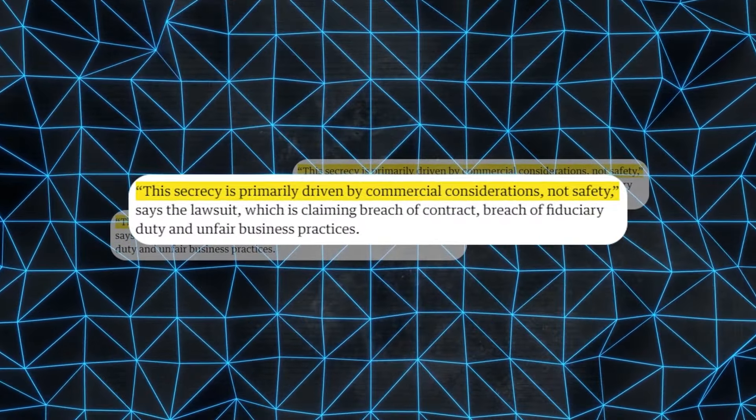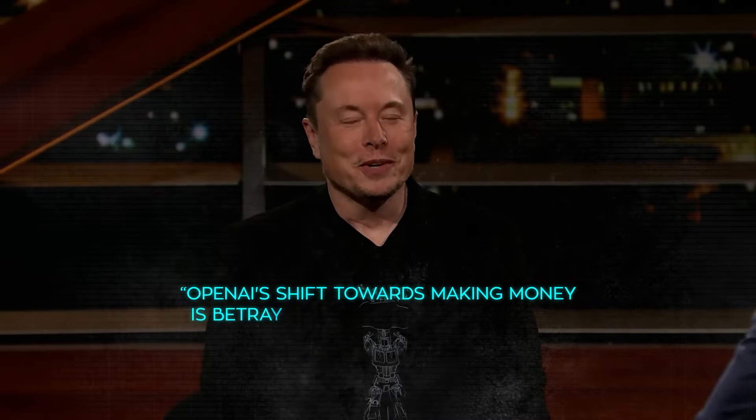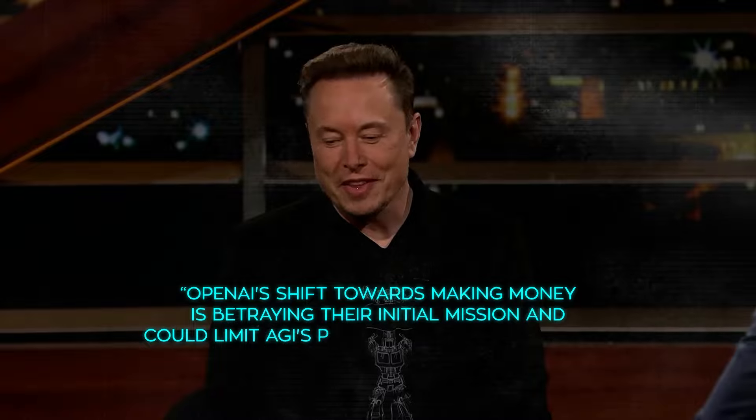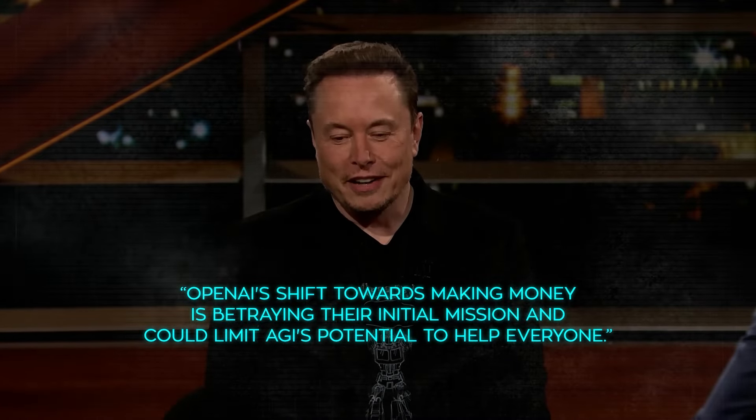And Musk isn't just talking, he's pointing out real issues, like the secrecy around OpenAI's latest work, including the mysterious GPT-4. He thinks OpenAI's shift towards making money is betraying their initial mission and could limit AGI's potential to help everyone.